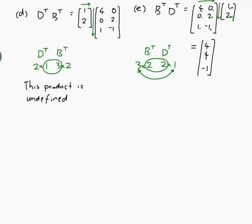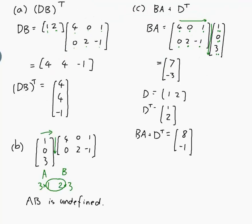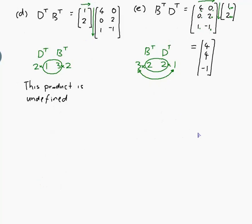Now interestingly, this number here, 4, 4, minus 1, is the same as what we got if we look back for DB and then transpose. So I'm interested to know if that's always true, and it is. Note: B transpose D transpose is the same as DB and then transpose. So you can bring the transpose out of both of them, but you have to reverse the order of the matrices.